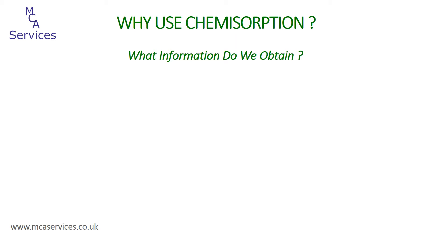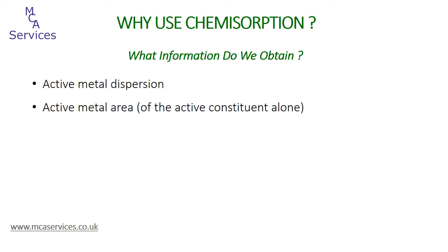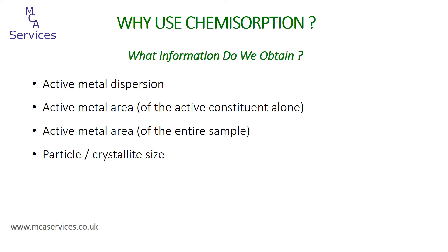So what information do we obtain from chemisorption analysis? The first thing is the dispersion of the active metal or metals on the support material — that is, a measure of how much of the active material is actually available for chemical reactions to occur. The second is the surface area of the active material, expressed per unit mass of just the active metal alone, and also per unit mass of the entire sample including the support. We can also determine particle size and crystallite size of the active materials. Through ammonia or amine chemisorption and temperature programmed desorption techniques, it's also possible to determine the surface acidity of a catalyst, which is fundamentally important to catalyst performance for certain chemical reactions.